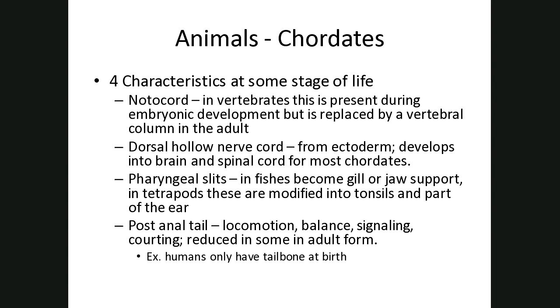That was our last invertebrate group. Tonight's focus is going to be on the chordates. To be a chordate, you have to have had these four characteristics at some stage of life — they don't have to persist into adulthood, but at some point in development all four must be true. The first is what we call a notochord. In vertebrates like us, we no longer have a notochord as an adult; instead we have a vertebral column in our spine. This notochord is replaced by the vertebral column, but in embryonic stages it was present.